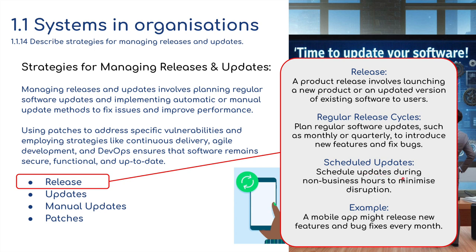Scheduled updates are planned during non-business hours to minimize disruption. It might say: your software is ready to be updated, it is scheduled for midnight tonight — do you want to continue? You click yes, and hopefully while you're asleep the software will update, and you wake up in the morning with new software on your mobile phone. A mobile app might release new features and bug fixes every month.